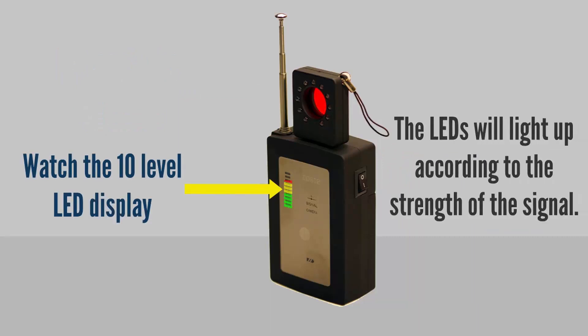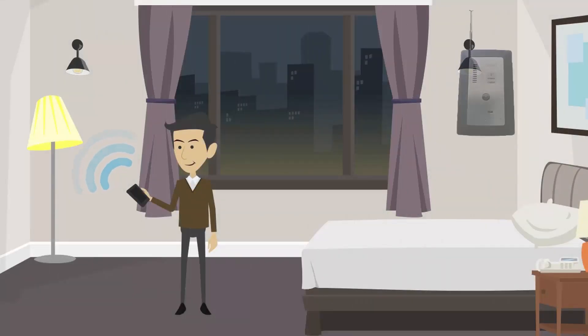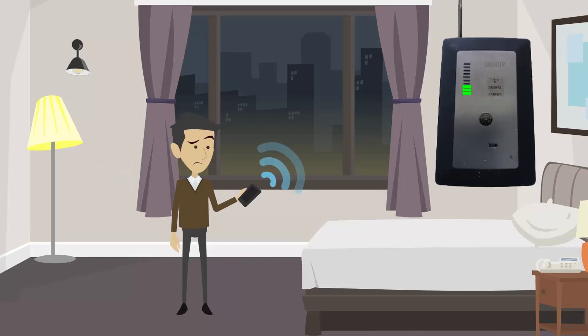Point the device around the room and look for an increase of the LED bars. Move in the direction of the stronger signal.